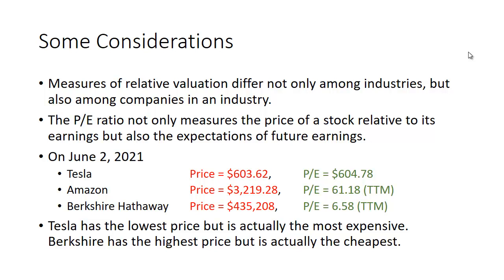The PE ratio not only measures the price of the stock relative to its earnings, but it also accounts for the expectations of future earnings. Why are you willing to pay more for a dollar of a company's earnings? Because you think the company has greater prospects in the future. On June 2nd, 2021, I looked up three well-known companies. Tesla had a price of $603.62. Amazon had a higher price of $3,219.28. And Berkshire Hathaway — that's not a typo — had a price north of $435,000. So Tesla is the cheapest stock by price, Amazon second, and Berkshire the most expensive.